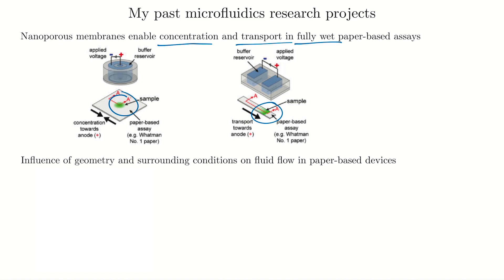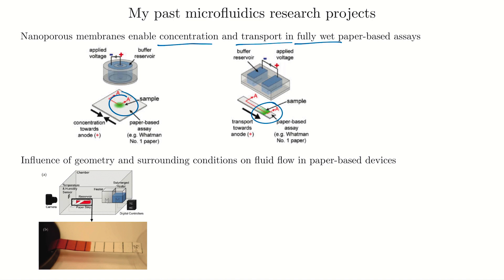In a paper on the influence of geometry and surrounding conditions on fluid flow in paper-based devices, we were looking to make sure that flows in paper were predictable. I'm showing the test chamber we built and the test setup: we flowed dye down the device and tried to understand how the shape of the paper and surrounding conditions would impact paper-based microfluidic devices.